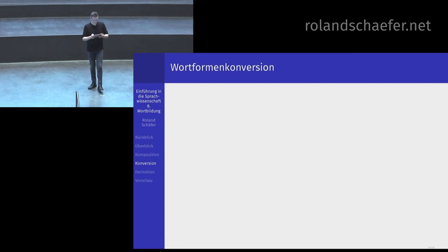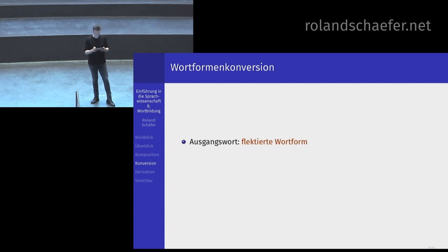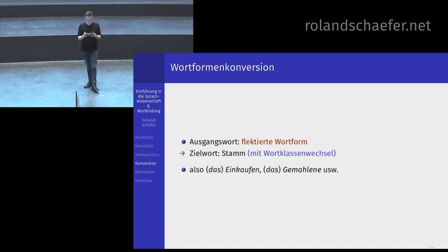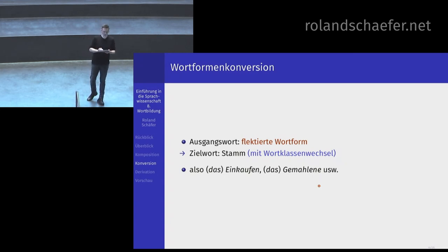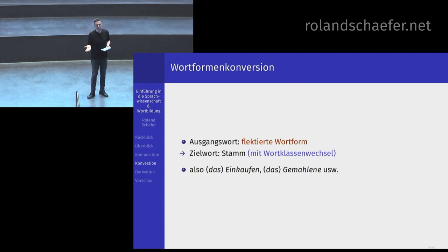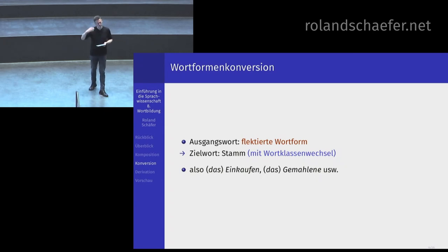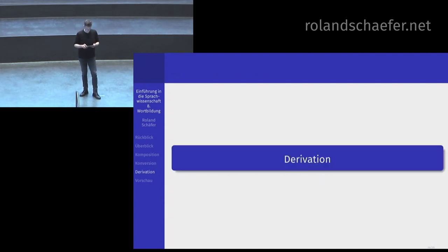Das war die Stammkonversion. Die Wortformkonversion hatten wir auch schon als Beispiele: da ist das Ausgangswort eine flektierte Wortform, und das Zielwort ist aber wieder ein Stamm mit Wortklassenwechsel – also das Einkaufen, das Gemahlene und so weiter. Das Gemahlene ist das Beispiel für eine etwas fiese Ausnahme, wo alles ein bisschen komplizierter wird. Überlegen Sie: wie flektiert das Gemahlene? Machen Sie die Kasus-Numerus-Form und denken Sie nach, wie das genau geht und warum ich sage, das ist irgendwie ein schwieriger Fall – aber sehr interessant.